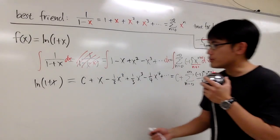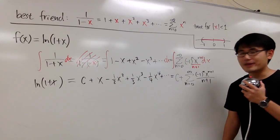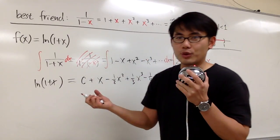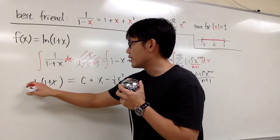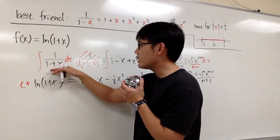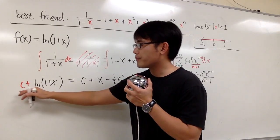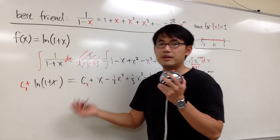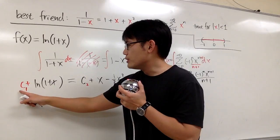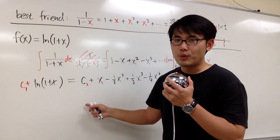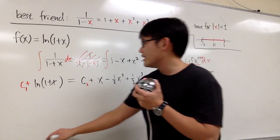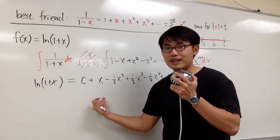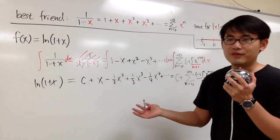A small question is what should c equal? Technically we should also have a plus c on the left side when integrating. Call them c1 and c2 — these two c's may be different, but subtracting c1 from both sides gives c2 minus c1, which is just another constant. So it doesn't really matter; we just worry about one c on the right-hand side, the same as when solving differential equations.